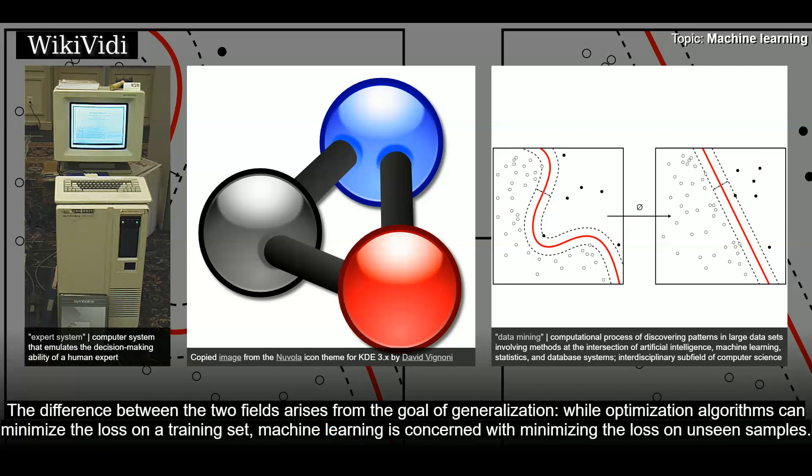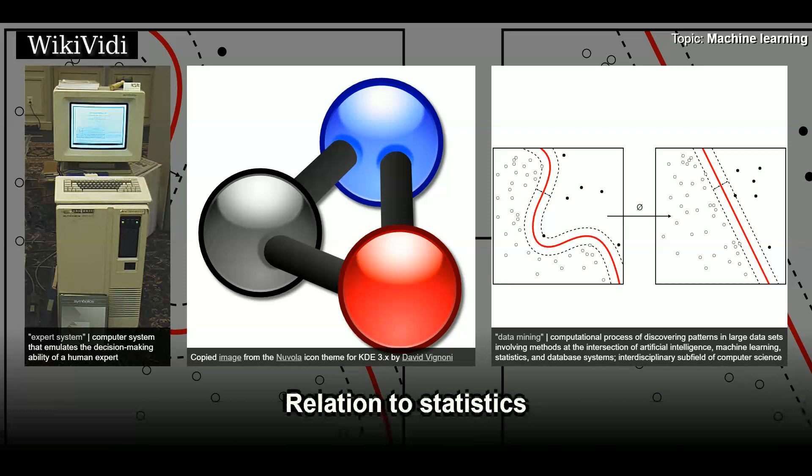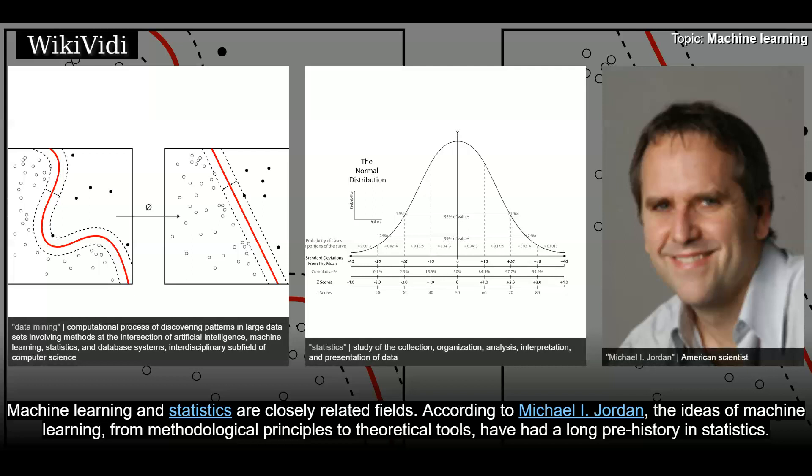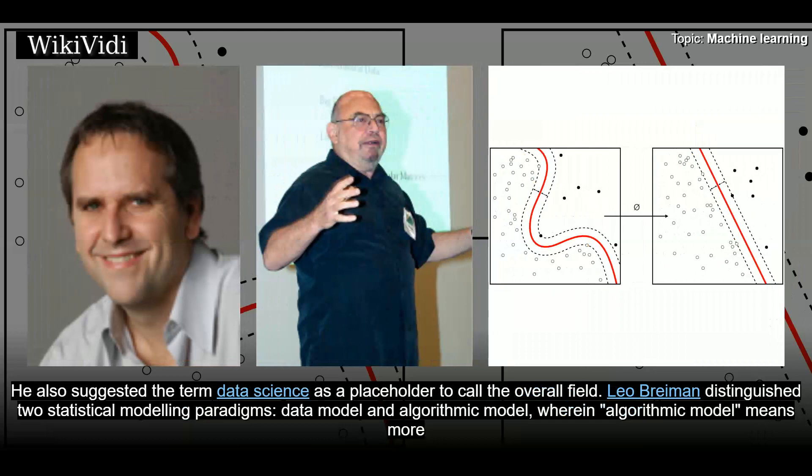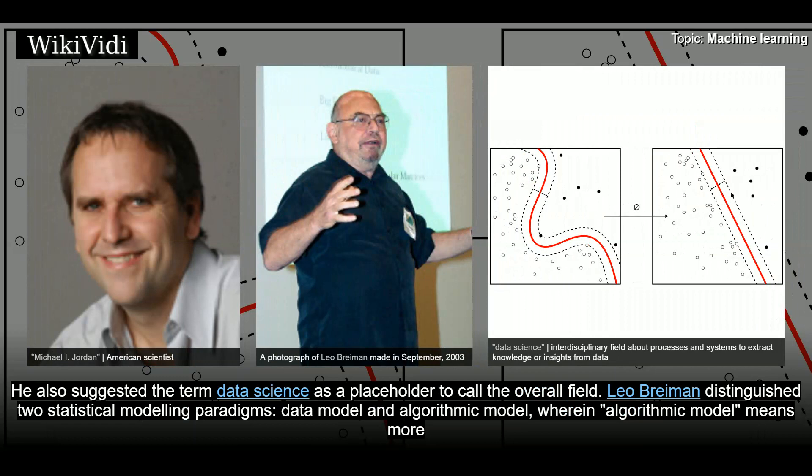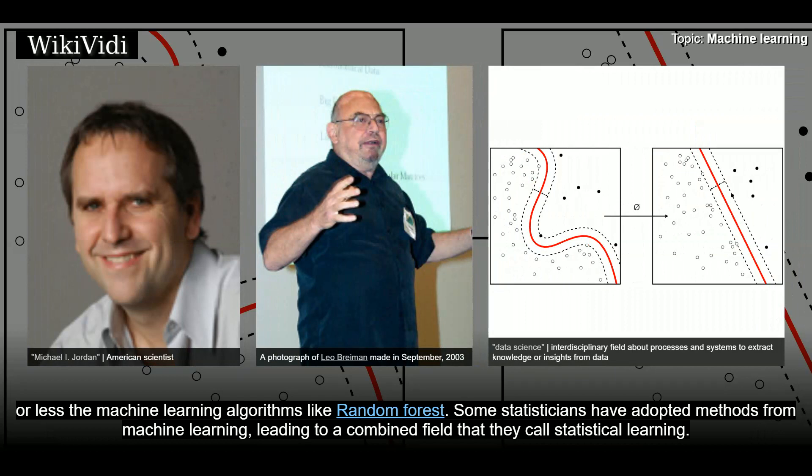Relation to statistics. Machine learning and statistics are closely related fields. According to Michael I. Jordan, the ideas of machine learning, from methodological principles to theoretical tools, have had a long prehistory in statistics. He also suggested the term data science as a placeholder to call the overall field. Leo Breiman distinguished two statistical modeling paradigms, data model and algorithmic model, wherein algorithmic model means more or less the machine learning algorithms like random forest. Some statisticians have adopted methods from machine learning, leading to a combined field that they call statistical learning.